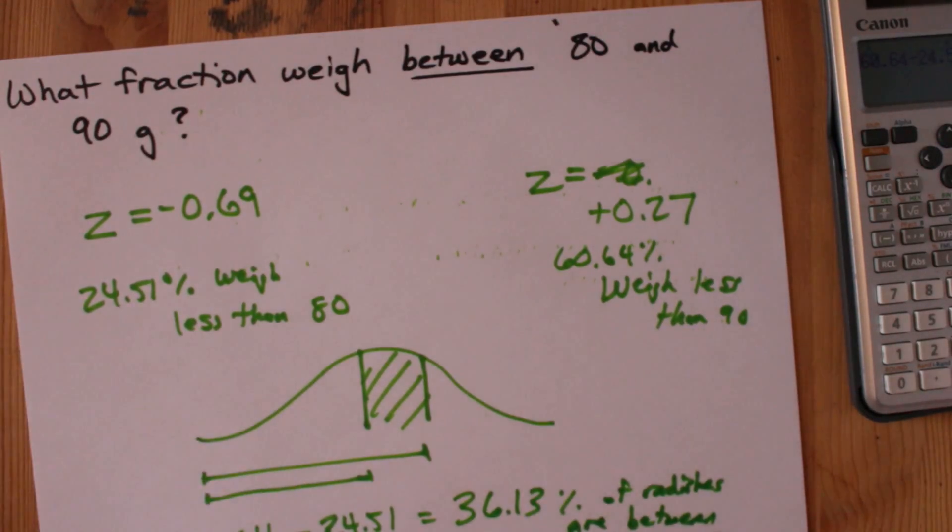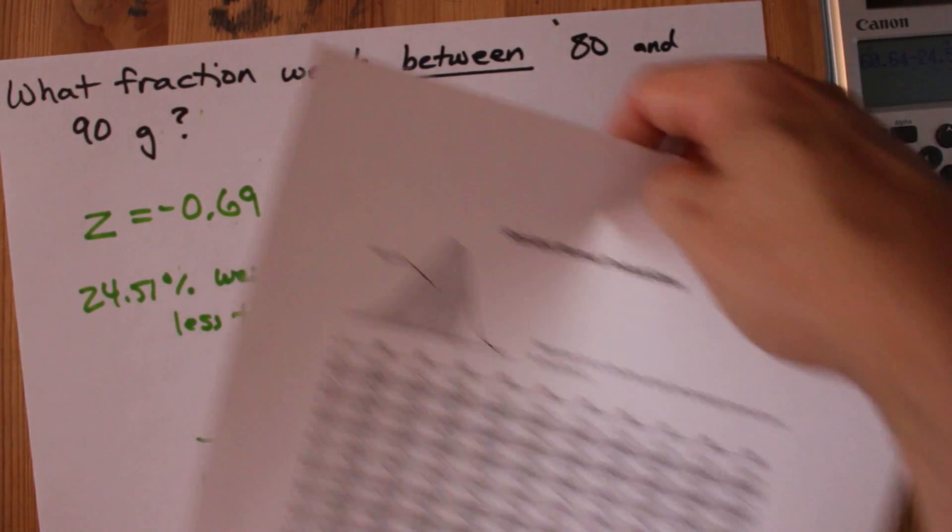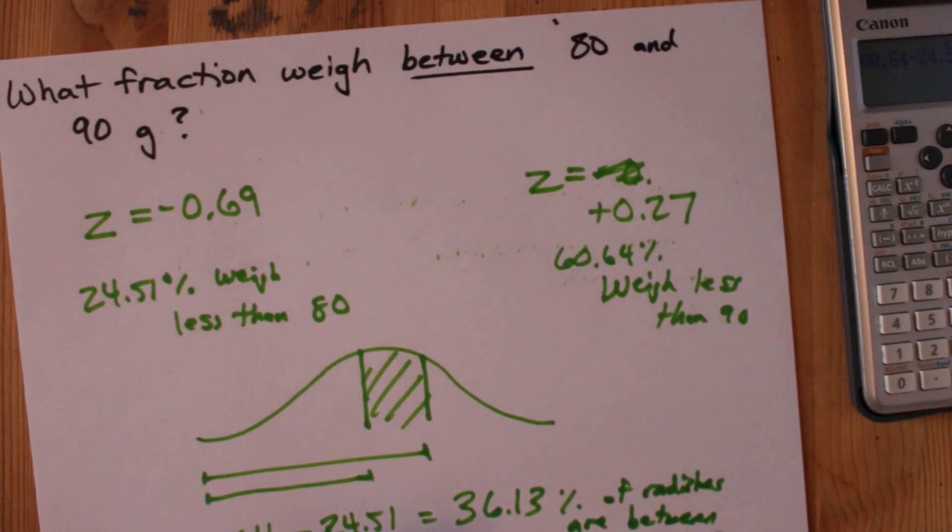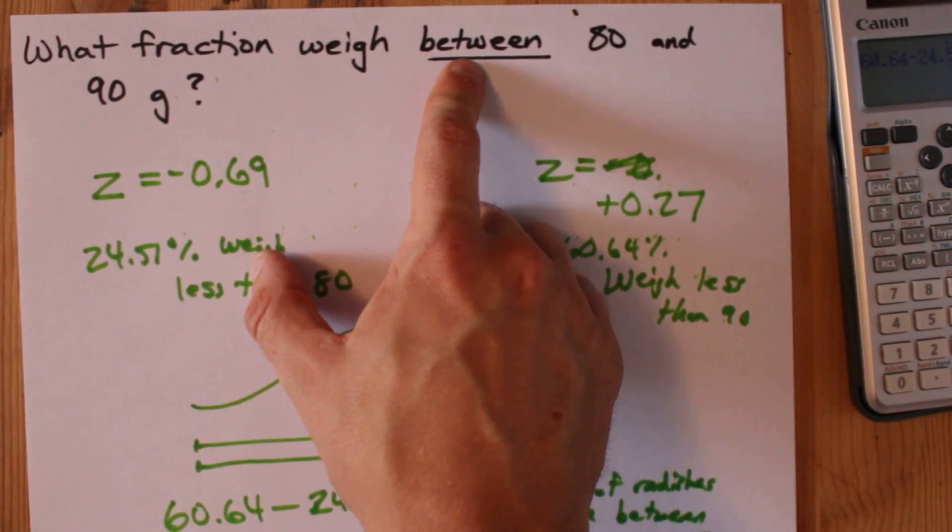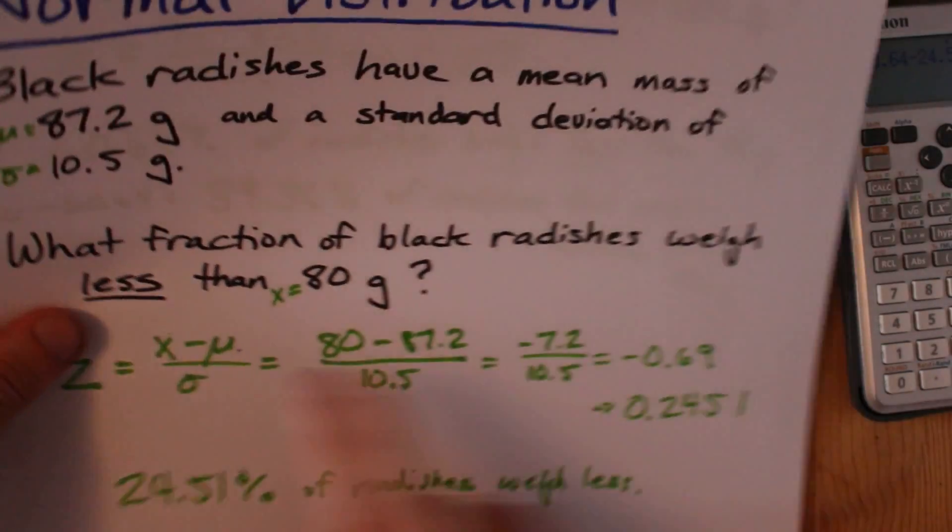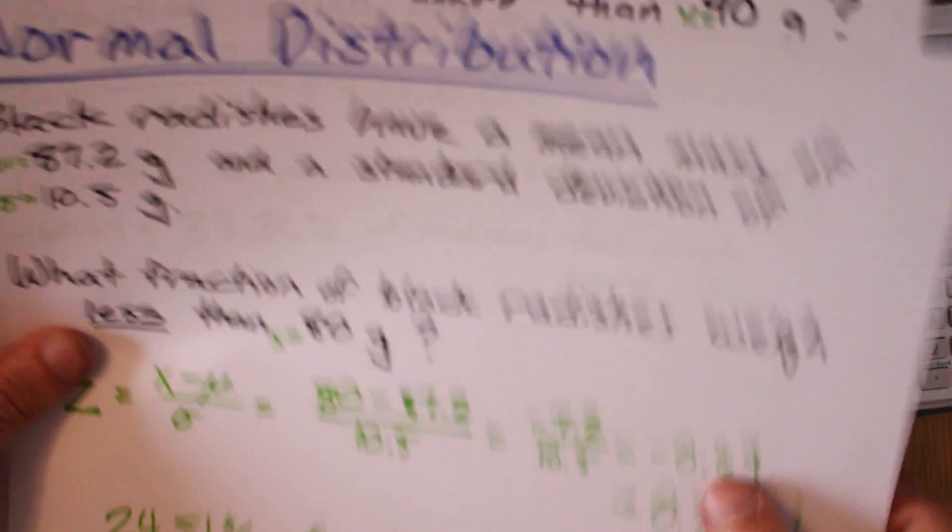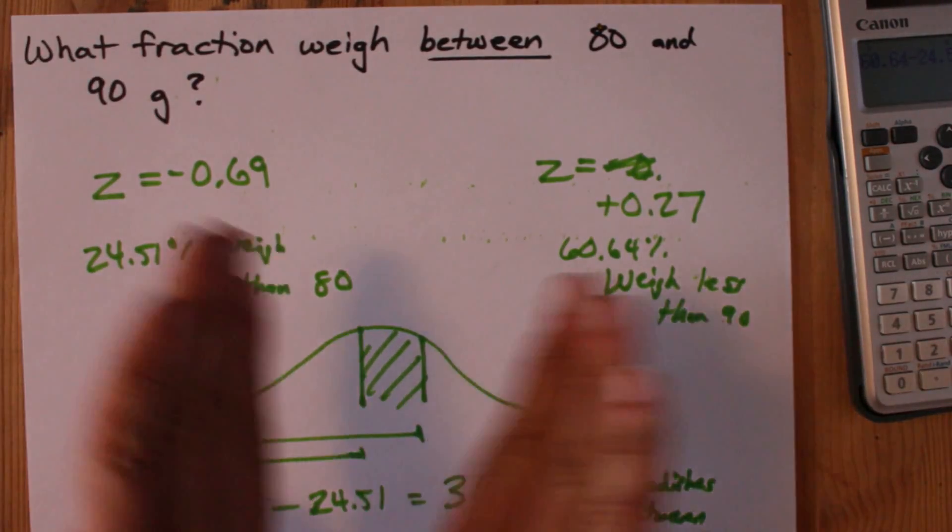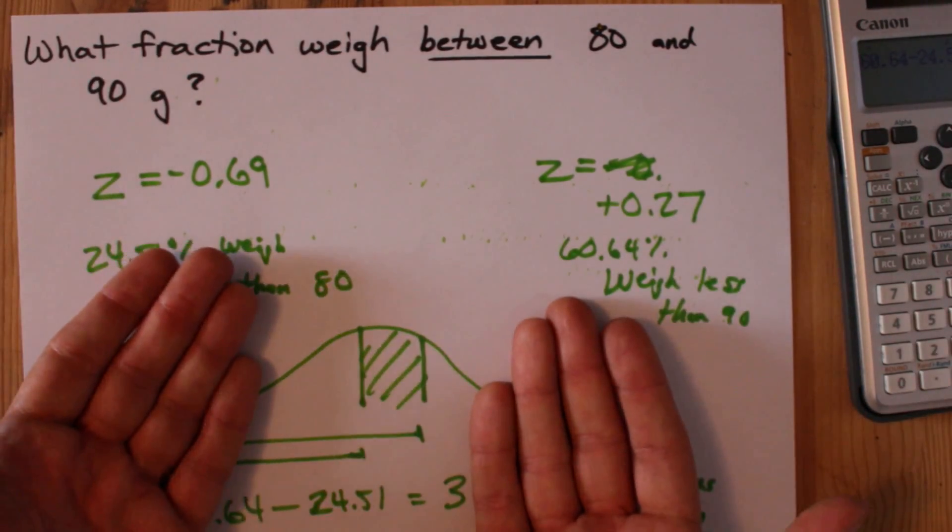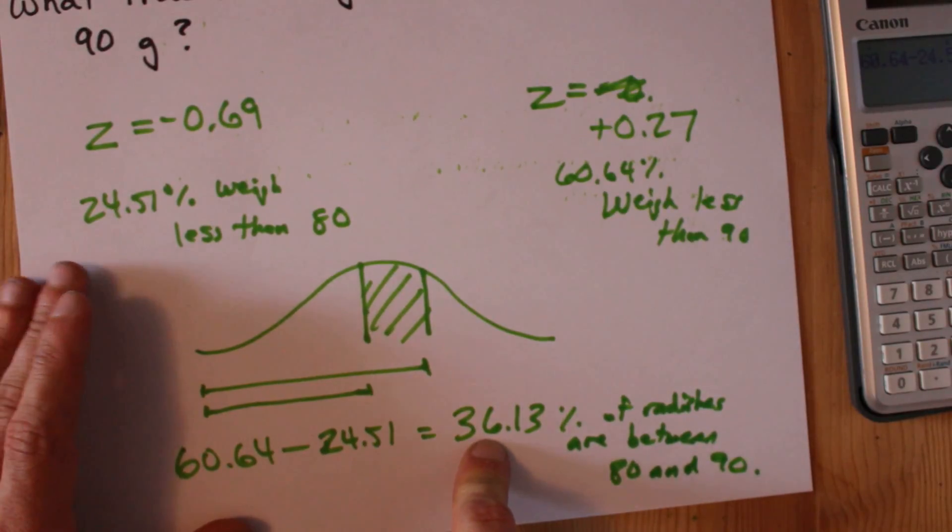That's how to do all of these z-score questions. You've got to be able to use the z-score table if you want to get anywhere with it. There was a shortcut that I didn't tell you about for the betweens, because if you already have the stuff that's less than 80, and you already have the stuff that's more than 90, you could just cut both of those percents away from 100, and you should also end up with this amount.